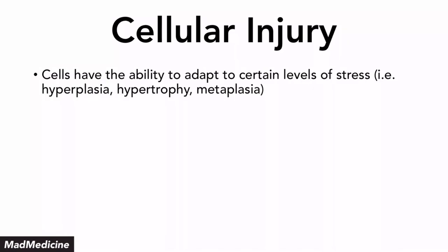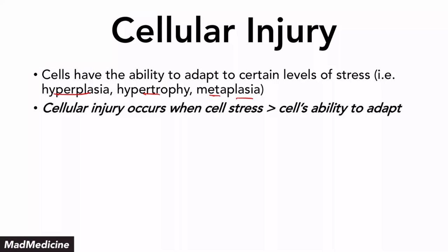The cell can get damaged and injured in many ways, but essentially when stress is placed upon a cell, our cells are able to adapt to a certain level of stress through certain mechanisms like hyperplasia, hypertrophy, and metaplasia. And when the level of stress placed upon a cell exceeds the cell's ability to adapt, you are going to have cellular injury occur.